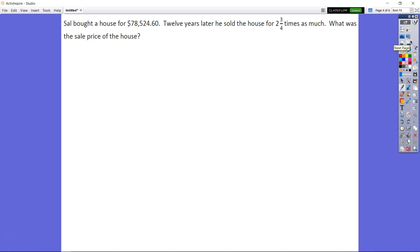Moving on to the next. So Sal bought a house 12 years ago for $78,524.60. 12 years later, he sold the house for 2 and 3 fourths times as much. What is the sale price of the house?